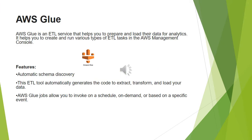The first ETL tool is AWS Glue. AWS Glue is an ETL service that helps you to prepare and load data for analytics. It helps you to create and run various types of ETL tasks in the AWS management console. Some features of AWS Glue are: it has automatic schema discovery, it automatically generates the code to extract, transform and load your data, and AWS Glue jobs allow you to invoke on a schedule, on demand, or based on a specific event.